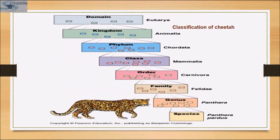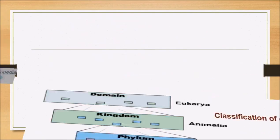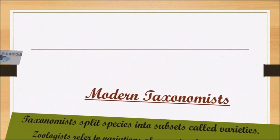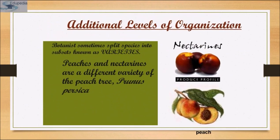The classification of a cheetah similarly goes through domain, kingdom, phylum, class, order, family, genus and species in descending order. Modern taxonomists split species into subsets called varieties. Zoologists refer to variations of a species that occur in different geographic areas as subspecies. To classify organisms, modern taxonomists consider phylogeny, or the evolutionary history of the organism.